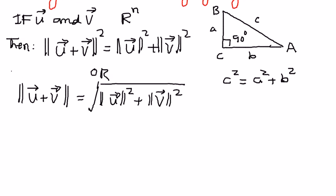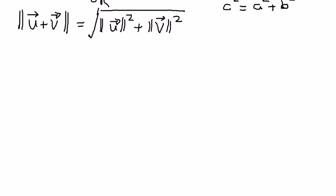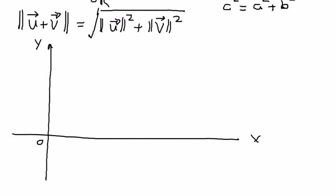In terms of graphical representation, we can represent this as follows. If I want to draw a graph here, this is X, this is Y, and this is the origin here.